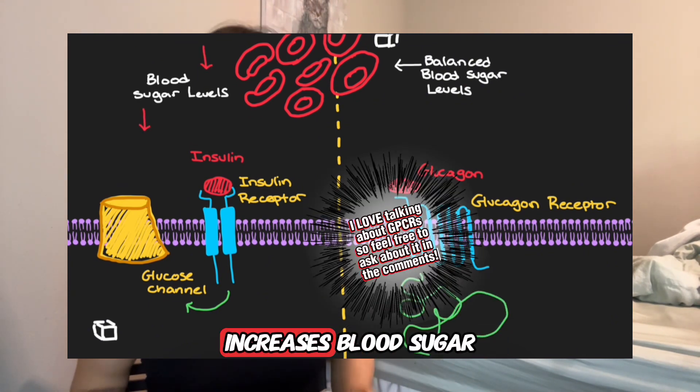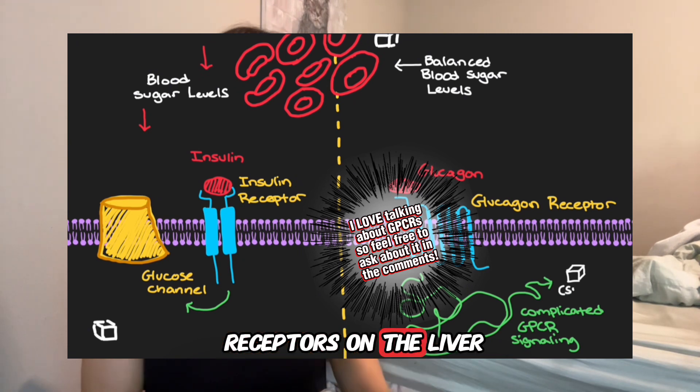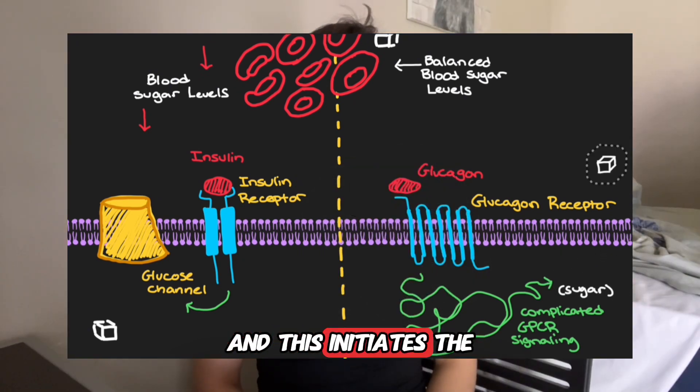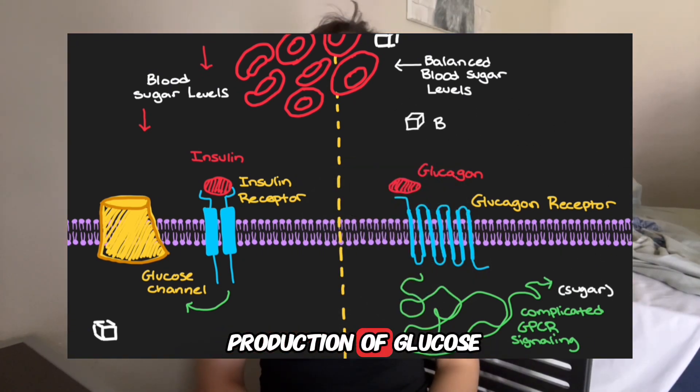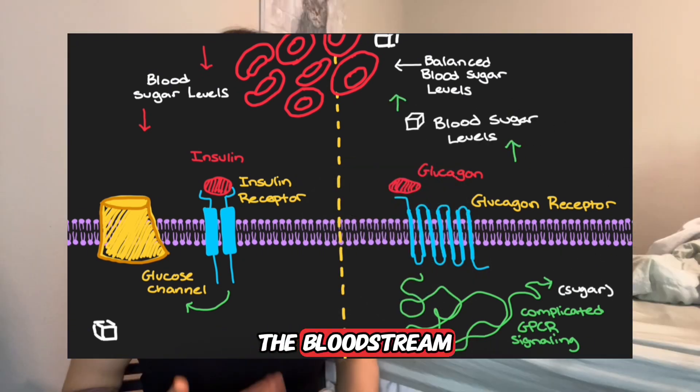Conversely, glucagon increases blood sugar by binding to glucagon receptors on the liver, initiating the production of glucose which is then shuttled into the bloodstream.